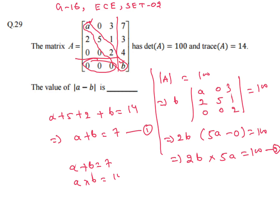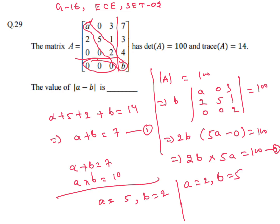Solving the two equations, we get a = 2 or b = 5 (or a = 5, b = 2). The magnitude of a minus b is |5 − 2| = 3, or |2 − 5| = 3. So 3 is the answer.